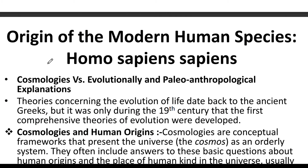Exactly when Homo sapiens evolved into Homo sapiens sapiens is a complex question based on when humans became anatomically modern and when they became behaviorally modern. The origin of modern human species — Homo sapiens sapiens — involves both cosmological versus evolutionary and paleoanthropological explanations. Theories concerning the evolution of life date back to the ancient Greeks, but it was only in the 19th century that the first comprehensive theory of evolution was developed.